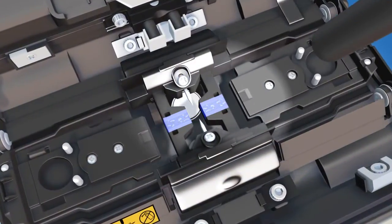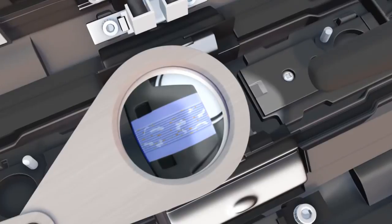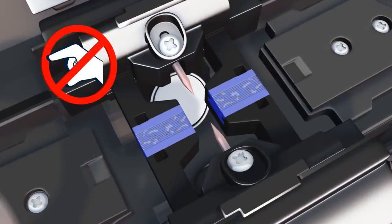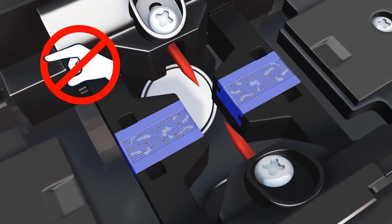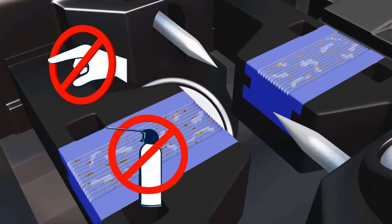To begin the cleaning process, use the LED pen light and eye loop to inspect the V-grooves. Take care not to touch the electrodes with any object during the cleaning process. Never use canned air to clean the fusion splicer.